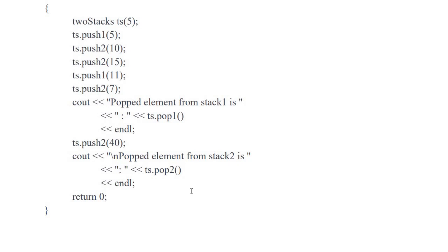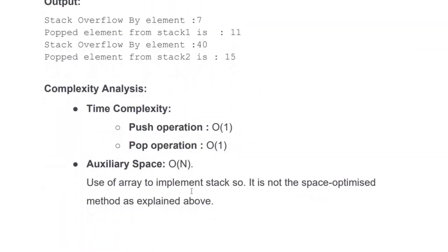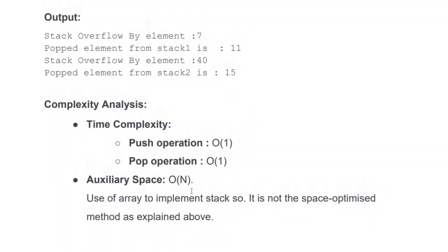The time complexity of each operation in this code is O(1), and the auxiliary space used is O(n). However, the issue is that it is not space-optimized, as we explained earlier. Therefore, we will go with another approach that is space-optimized.